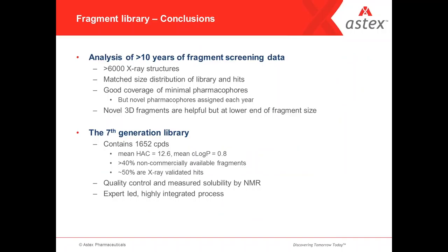To conclude this section on the fragment library: we constantly evolve our library by looking at output from fragment screening campaigns. We've matched the size distribution between the library and the hits, and we think we have good coverage of minimal pharmacophores and therefore chemical scaffolds — though we still annotate new pharmacophores each year. 3D fragments are useful but should be kept small. This has led to our seventh-generation library, which contains about 1,600 compounds with an average of 12 heavy atoms.